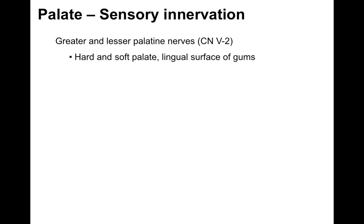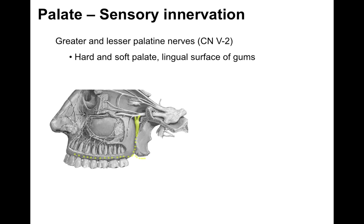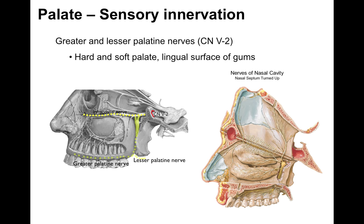Now the palate sensory innervation. So the palate is innervated by the greater and lesser palatine nerves, which are branches of V2 — covering the hard and soft palate and the lingual surface of the gums. There we've got cranial nerve V2 going through the foramen rotundum, and then the infraorbital nerve going to the maxillary teeth and the skin of the side of the nose and bottom eyelid. And then notice the descending greater and lesser palatine nerves that provide general sensory innervation of the hard and soft palate.